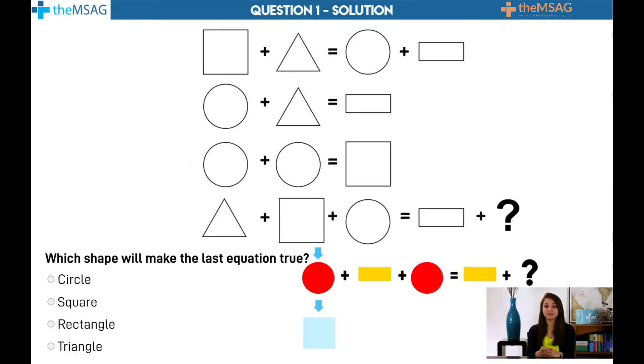You should now get square plus rectangle equals rectangle plus question mark. Eliminate the rectangle and you're left with the answer. It must be a square. So remember, always approach these questions with the substitution method. In this case, with just two substitutions, we were able to get the right answer.